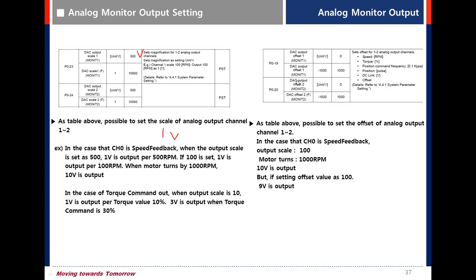The related parameters are P019 and P020. P019 is Monitor 1 offset setting, and P020 is Monitor 2 offset setting. For example, if Monitor 1 is speed feedback and the output scale is 100,